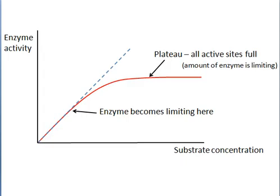On a graph, that would look like this. At low substrate concentrations, the rate of reaction is proportional to the amount of substrate. At this point on the graph, the enzyme is beginning to become limiting. At the plateau here, all the active sites are full, so it doesn't matter how much more substrate we add in; we can't speed up the reaction.